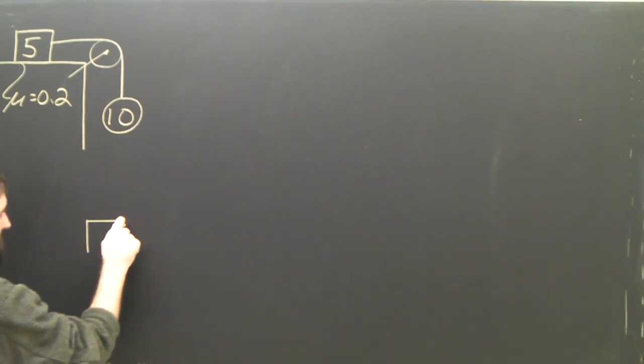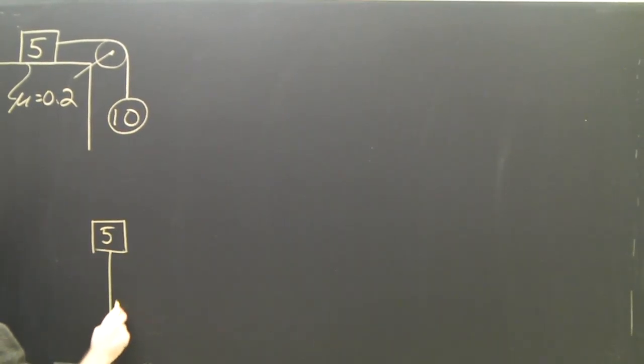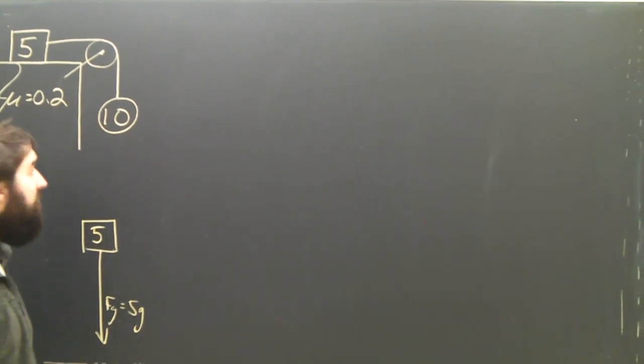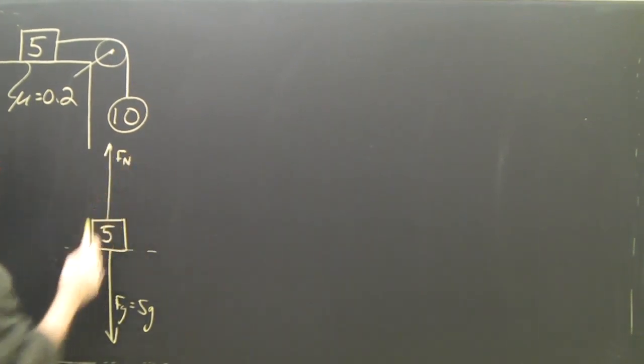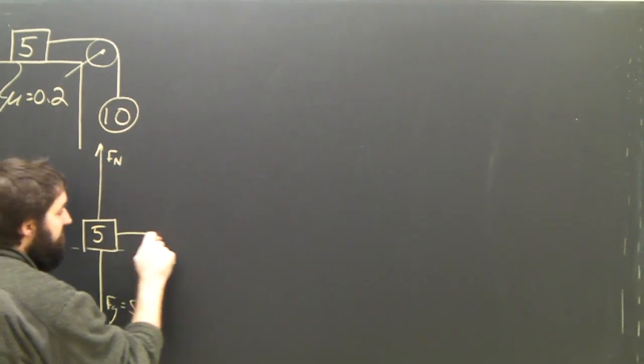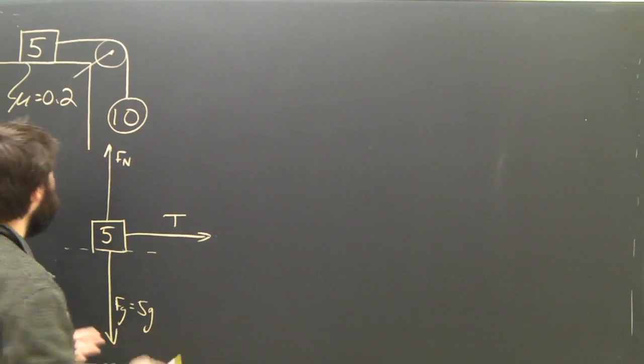So, 5kg object. Is there gravity? Yes, of course there is. It's 5g. Is there a normal force? Yes, it's resting on a surface, so we've got Fn. And is there an applied force? Well, there's tension, which is to the right. And is there friction? Yes, there is.